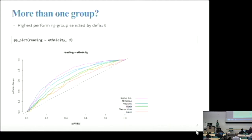If you have more than one group, it will just pick a reference group for you and plot different lines for all of the rest of the groups. By default, the reference group is going to be the highest achieving group. In this case, we're looking at white students, and we have all of the other race ethnicities there.